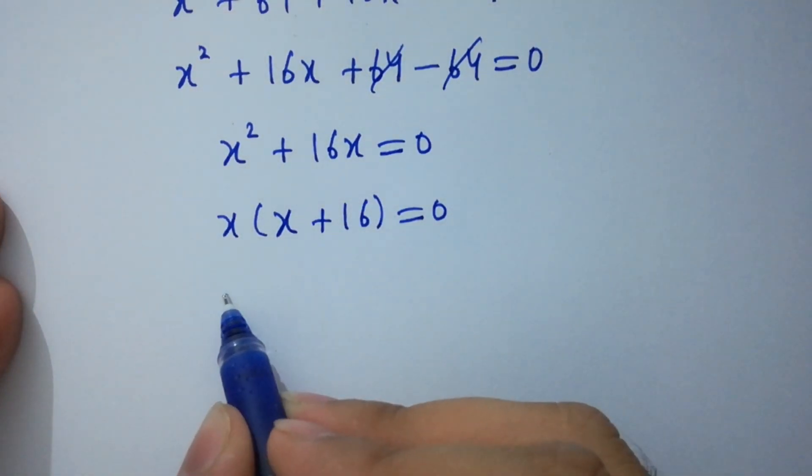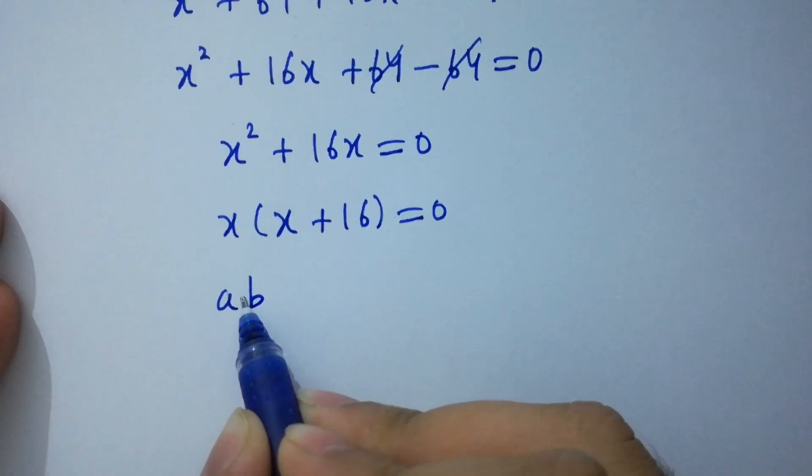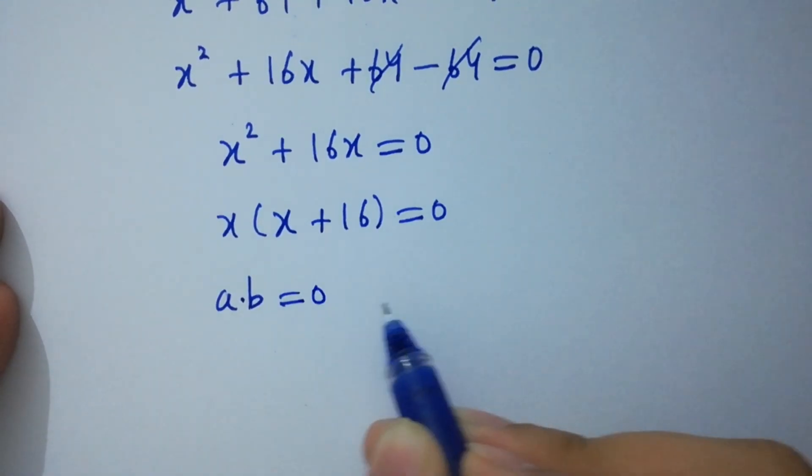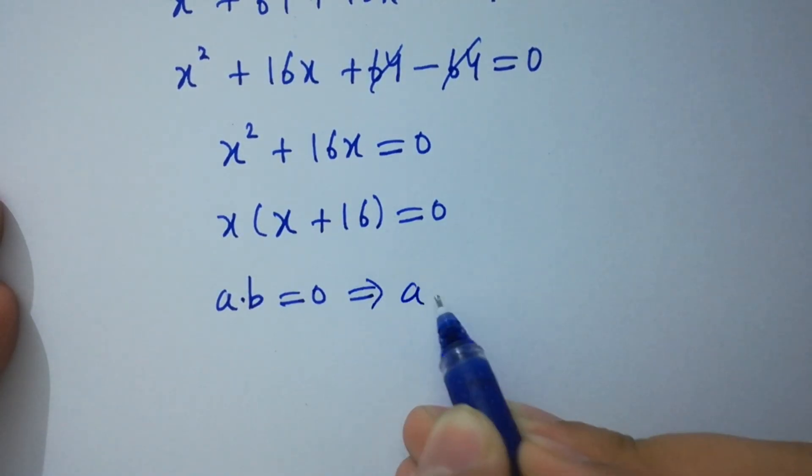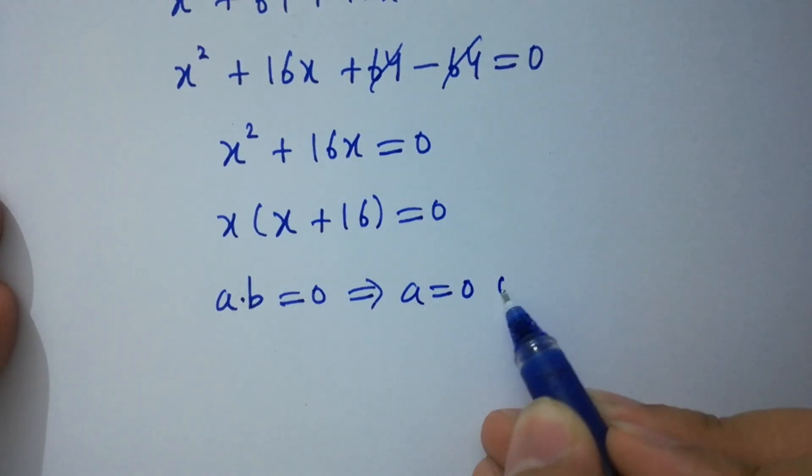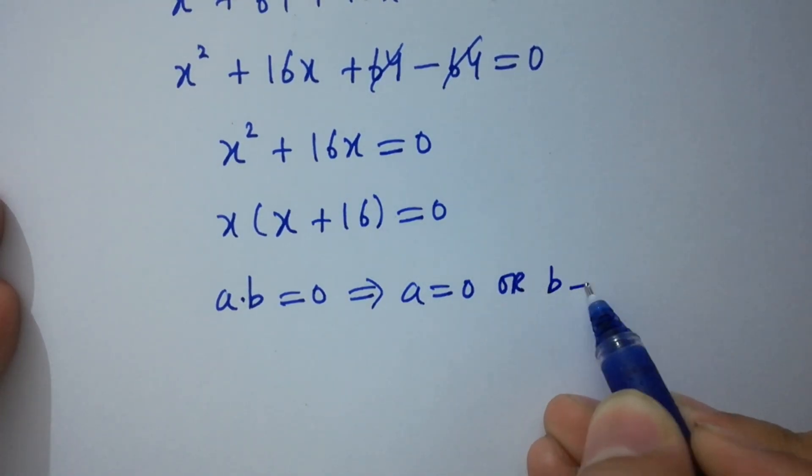As we know, if ab = 0, then a = 0 or b = 0.